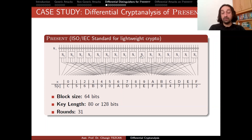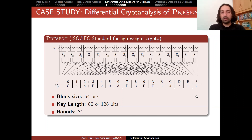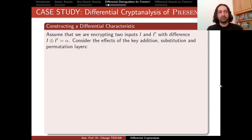We repeat this picture 31 times, and at the end we add a final key XOR, which is why we have 32 round keys, not 31. Assume we have a plaintext and we make a small change — flip one bit or two — and observe how it affects the key addition layer, substitution layer, and permutation layer. Let's focus on constructing a differential characteristic or a differential distinguisher.